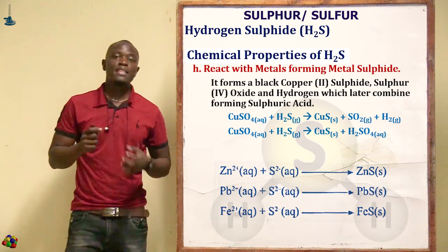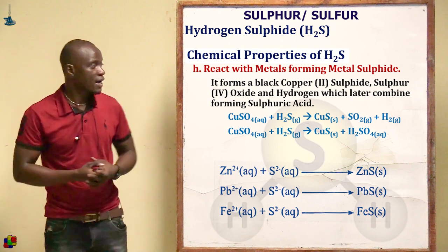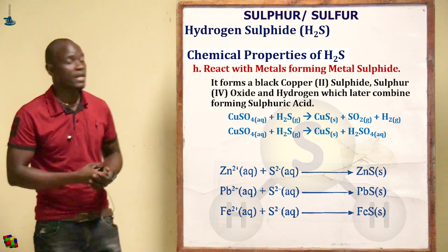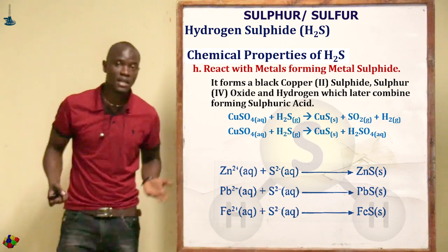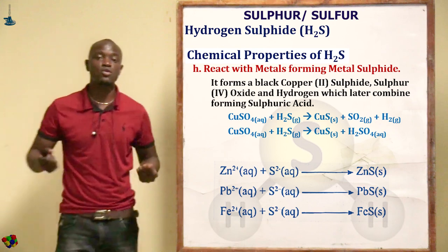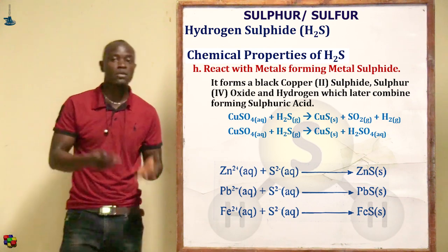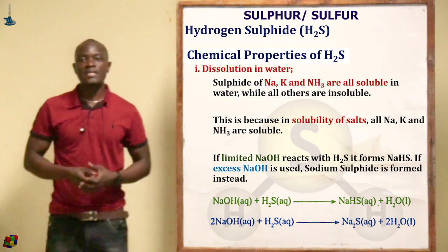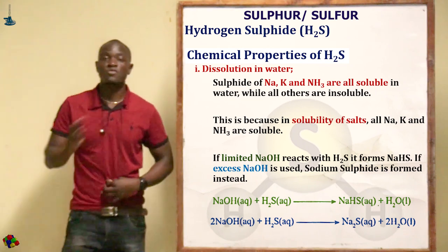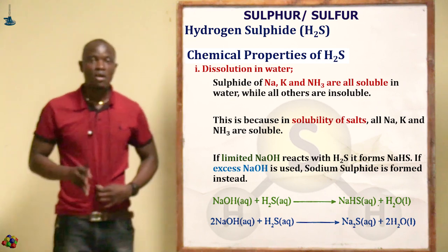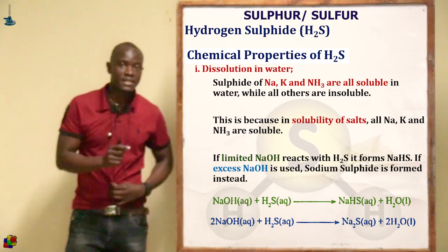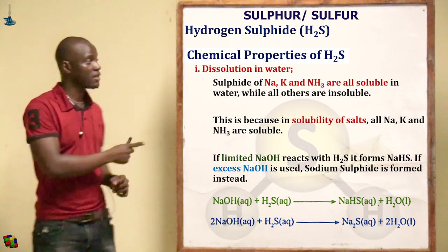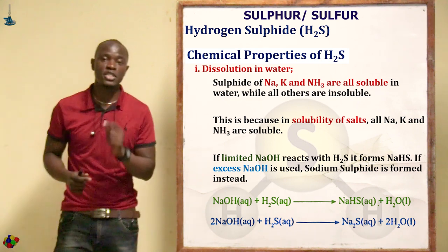Other metal sulfides are precipitated as follows: zinc ions reacting with sulfide ions give zinc sulfide; lead ions reacting with sulfide ions give lead(II) sulfide; iron ions give iron(II) sulfide. Most sulfides are insoluble in water — only the sulfides of sodium, potassium, and ammonium are soluble.